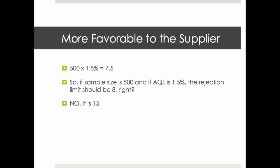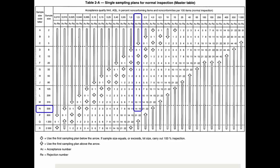Here's another way this shows the standard is more favorable to the supplier. Say your sample size is 500 and you set an AQL limit at 1.5%. If you multiply those two numbers, you get 7.5, so you'd think that finding 8 defects would be the rejection limit. But when you look at the standard, the number it gives you is 15. Here's the proof: 500 samples, 1.5% AQL, and the rejection number is 15. So it's very favorable to the supplier — it seldom rejects a batch even when the batch quality is poor.